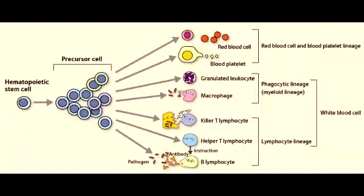Name all the blood cells of the lymphocyte lineage. The blood cells of the lymphocyte lineage include Killer T lymphocytes, Helper T lymphocytes, and B lymphocytes. So this is the lymphocyte lineage.